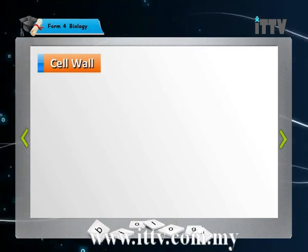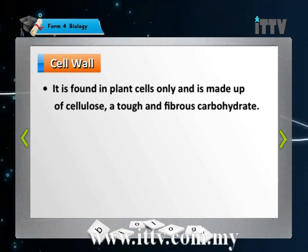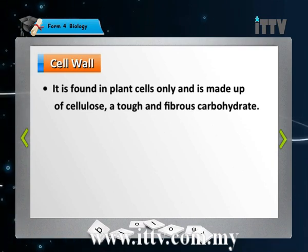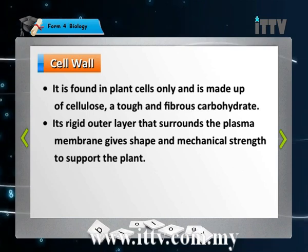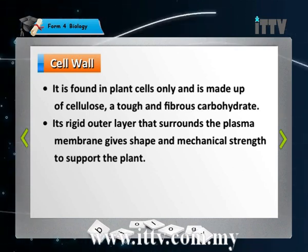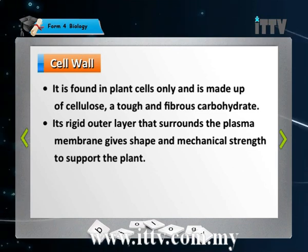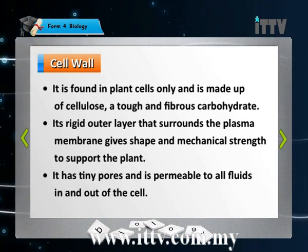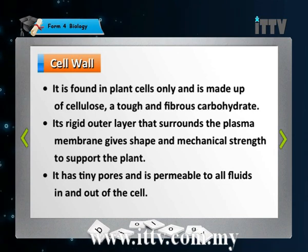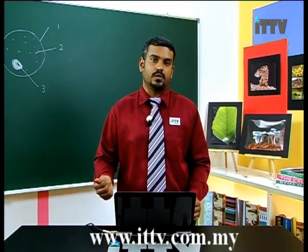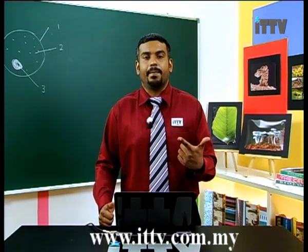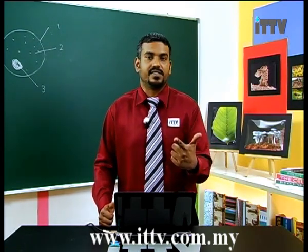The cell wall is found only in plant cells and is made up of cellulose, a carbohydrate which is tough, fibrous, rigid, and strong. The rigid layer surrounds the plasma membrane and gives shape and mechanical strength to support the plant. Without the cell wall, the plasma membrane would burst if there is an influx of water. The cell wall has tiny pores and is permeable to all fluids. The function of the cell wall: it protects and maintains the shape of the cell.